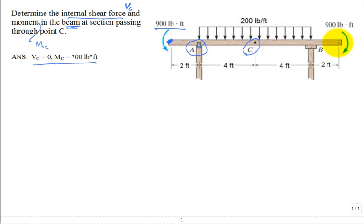We have a couple moment applied at the tip out there and a distributed load applied there. Before we go in and make a cut of the section at C and analyze either the section to the left or right of the cut, let's solve for the reactions at the support for the entire beam.